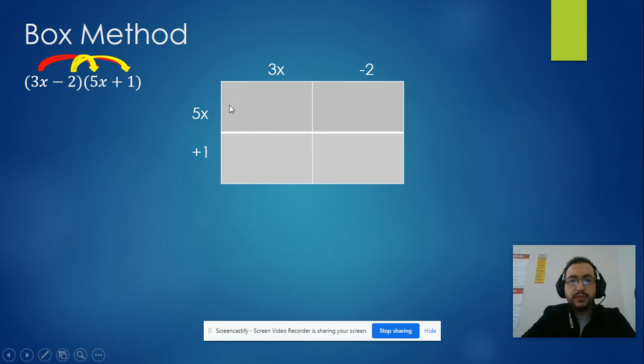And then we're going to multiply like 3x times 5x will be 15x squared, because we add the exponents. 1 and 1 will be 2, and 3 times 5 will be 15. And then 3x times 1, 3x, 5x times negative 2, negative 10x, and negative 2 times 1, negative 2.